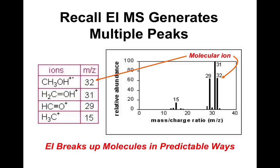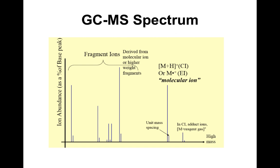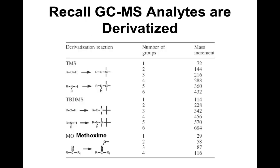In GCMS using electron ionization, we see multiple peaks — anywhere from 3 to 20 — rather than a single peak. We can see the parent or molecular ion, and it's generally a low-resolution unit-mass technique. Fragment ions come from the parent ion. It's important to remember that GCMS compounds are derivatized — for example with TMS (trimethylsilane), which adds 72 Daltons per TMS group, or TBDMS which adds more mass, or MO (methoxime). The masses must match the derivatized compound, not the pure compound.